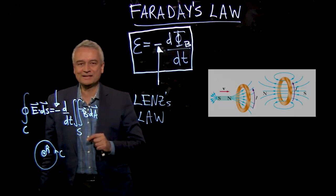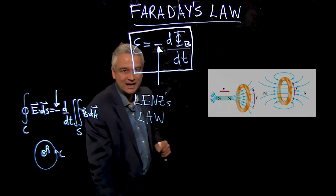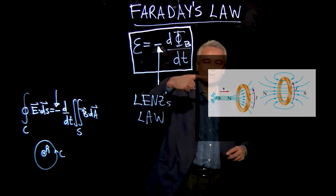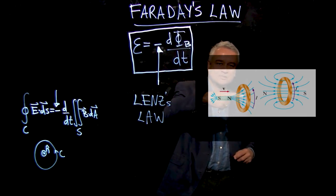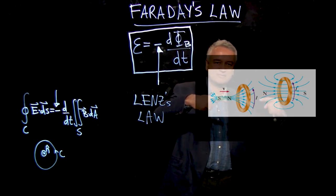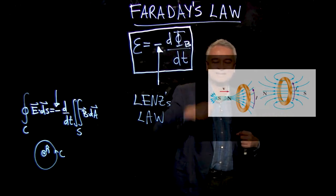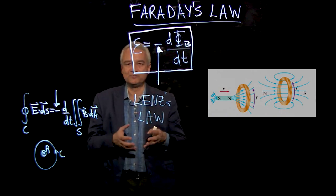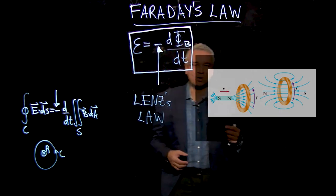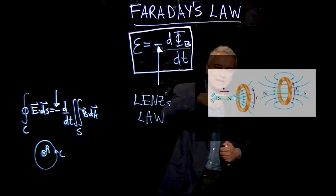Why is that important? Well, that's important because I now have a north pole fighting against the north pole. So as I am pushing this magnet towards the loop, the flux increases through the loop, it induces a current through the loop, and that current flows in a direction such that the loop itself becomes a magnet with a north pole that fights against the north pole coming into it and pushes back.